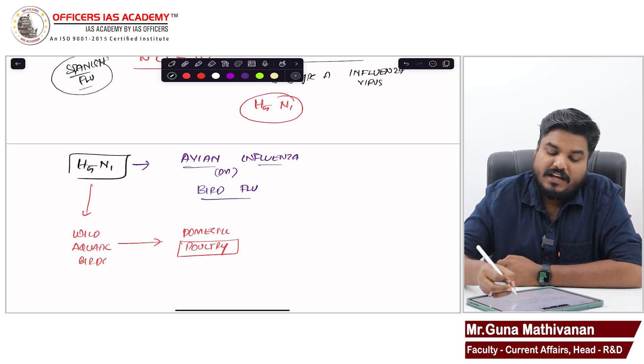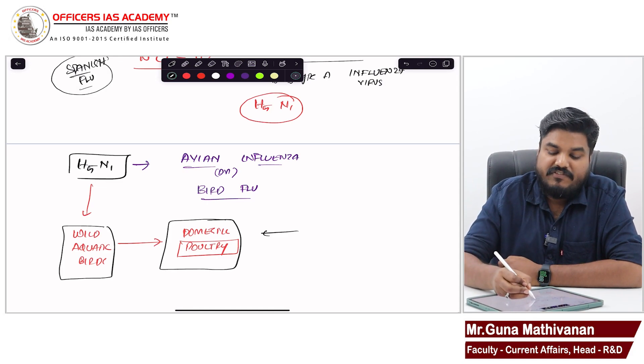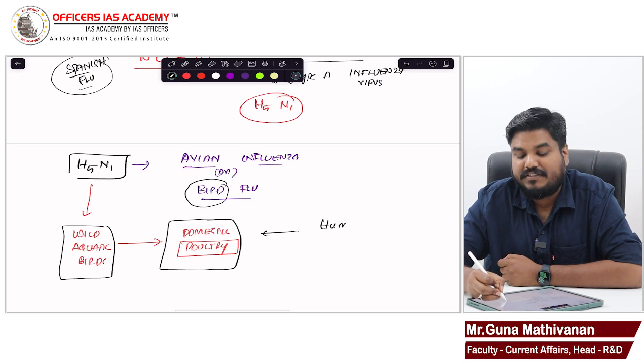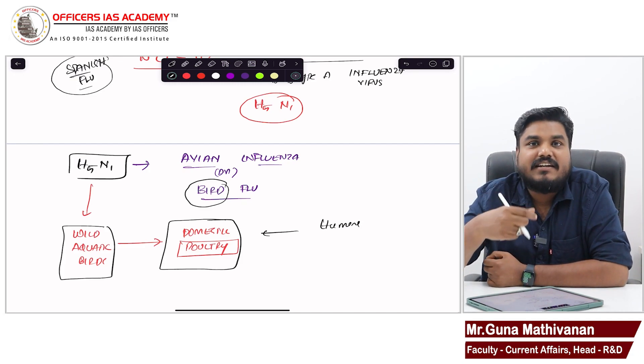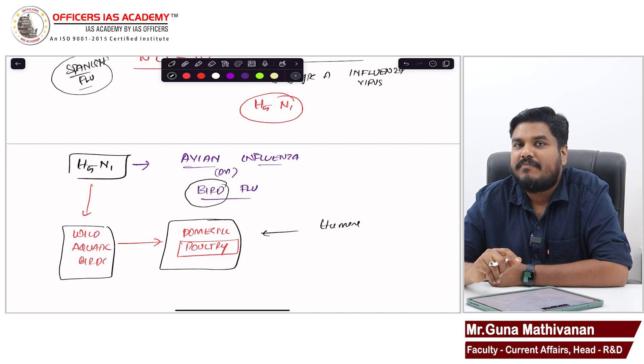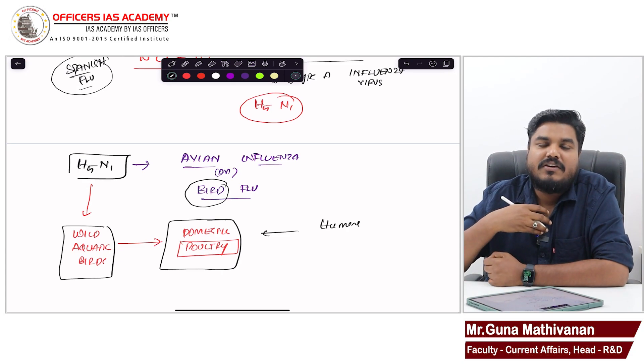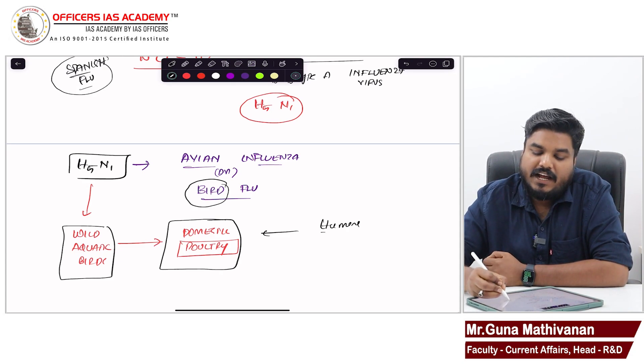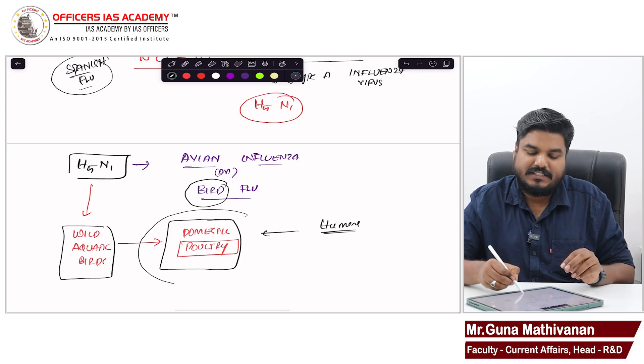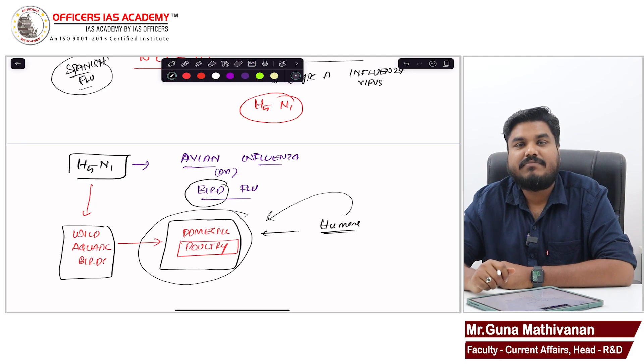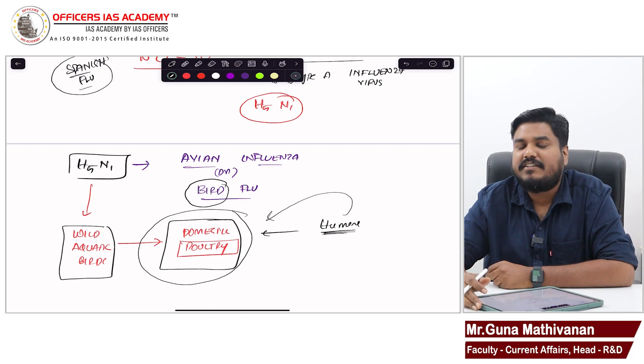Generally this H5N1 will be infecting birds. But when humans come in close contact with domestic poultry - eating infected chicken without proper cooking or working in poultry farms - then it can affect humans also. Generally H5N1 will not infect humans, but when we come in close contact with domestic poultry, we can be affected. It is highly fatal, very risky.